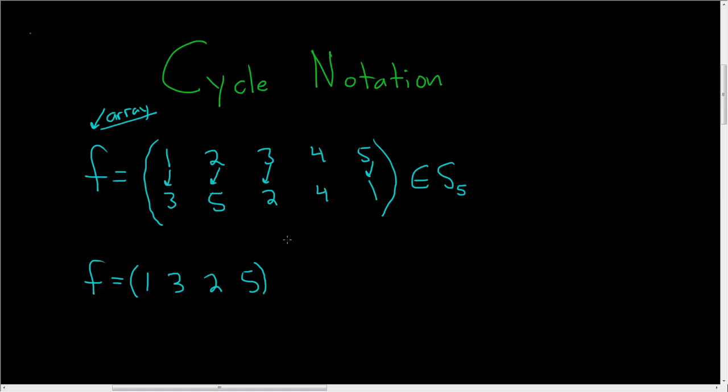And then here you have 4. So parentheses 4. And where does 4 go? Well, it goes back to where we started. So 4. So 4 is a fixed point, right? This permutation fixes 4. So we don't need to include this.